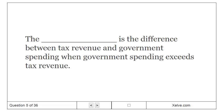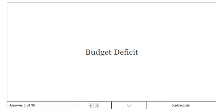The budget deficit is the difference between tax revenue and government spending when government spending exceeds tax revenue.